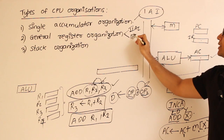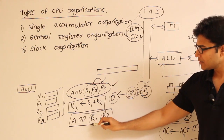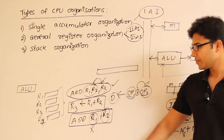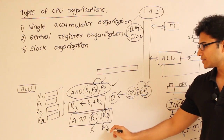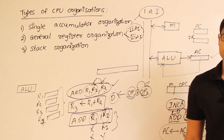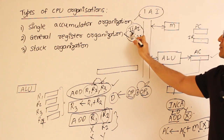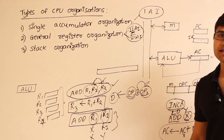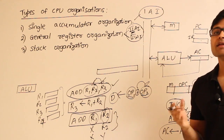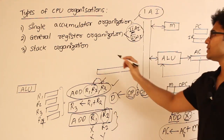In general register organization, whether the operands in the instruction represent register numbers, memory addresses, or direct values depends on the addressing mode, which we will discuss later. Along with the opcode, we have the option of specifying two or three operands. Both two-address and three-address instructions are possible in general register organization.